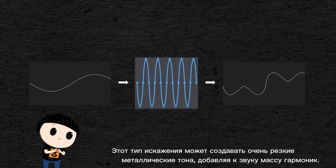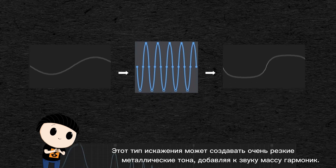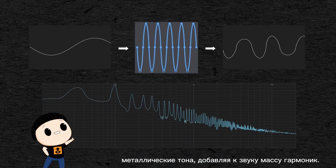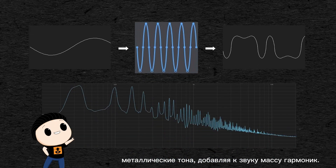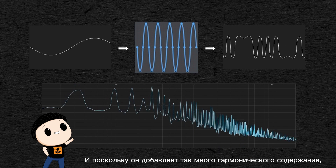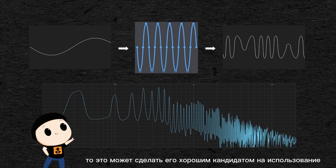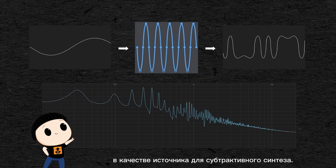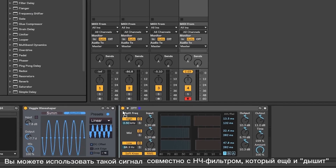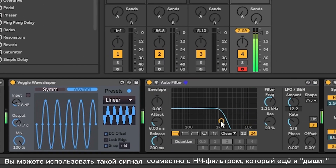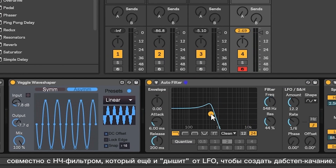Wave folding is a type of distortion that can create a very harsh, metallic tone by adding a ton of harmonics to the sound. Because it adds so much harmonic content, it can make it a good candidate to use as a starting point for subtractive synthesis. You can use it with a low pass filter that moves along with an LFO to create a dubstep wobble, for example.